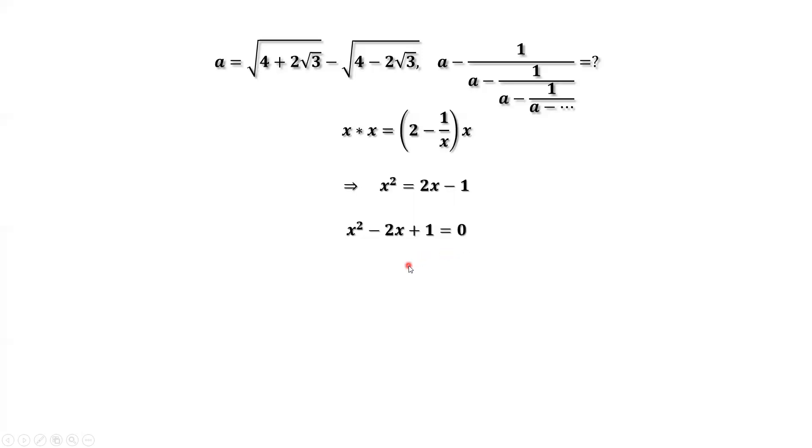Factoring the left-hand side, then we have x minus 1 squared equals 0. This implies x equals 1. x equals 1 means the value of this continued fraction is 1. That's all. Thanks for watching and I'll see you next time.